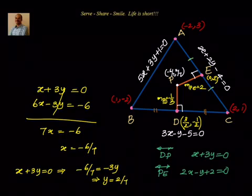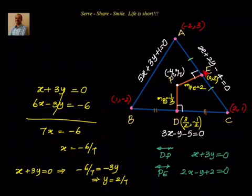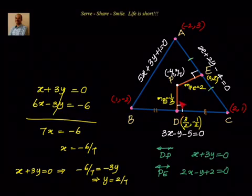Let us summarize: we were given equations of sides AB, AC and BC, and had to find the coordinates of circumcentre P. First, we found the coordinates of the vertices using simultaneous linear equations. Then, knowing that the circumcentre is the point of intersection of perpendicular bisectors, we found the midpoints of the sides and used the negative reciprocal slopes. Solving the two perpendicular bisector equations gave us the circumcentre. Thanks for your time and support. Bye for now.